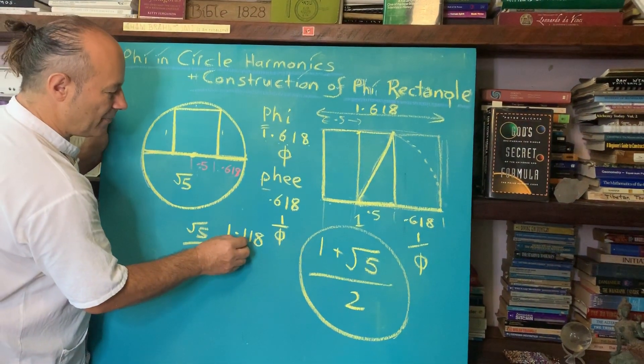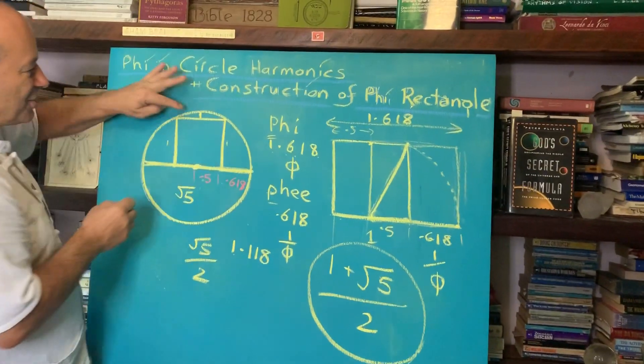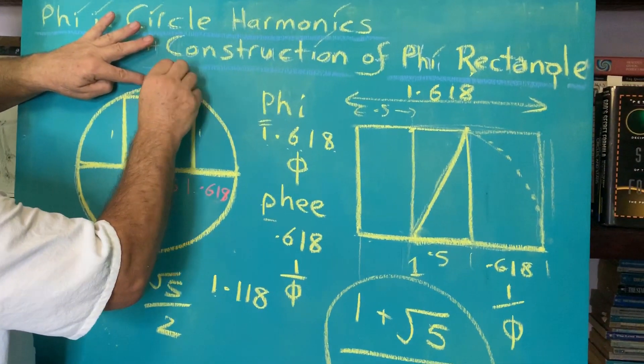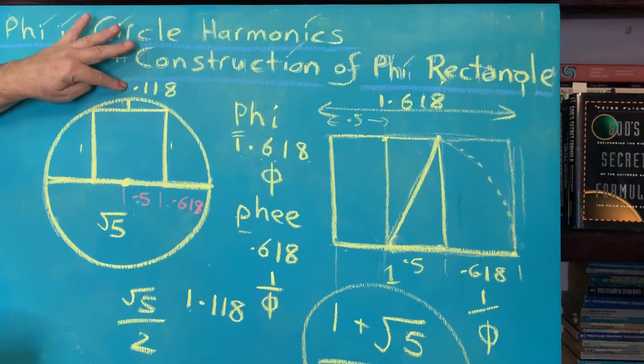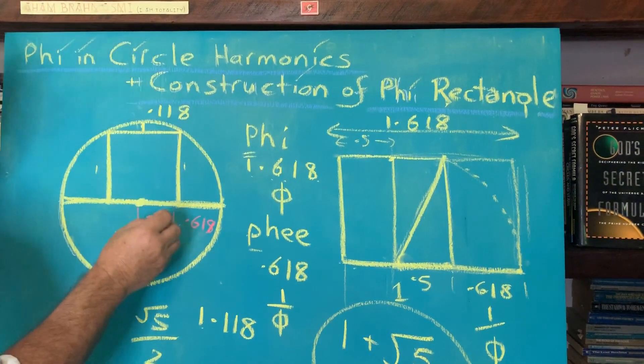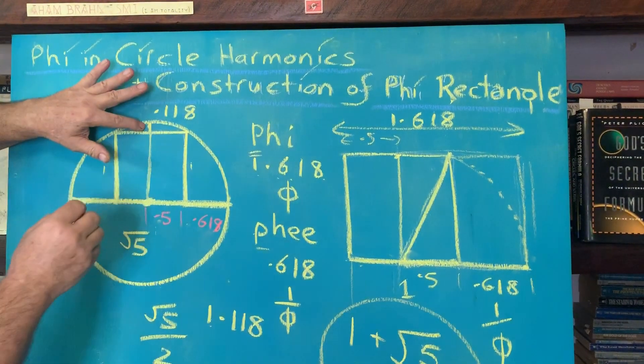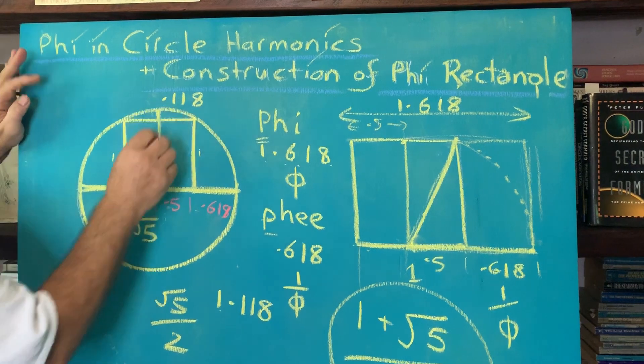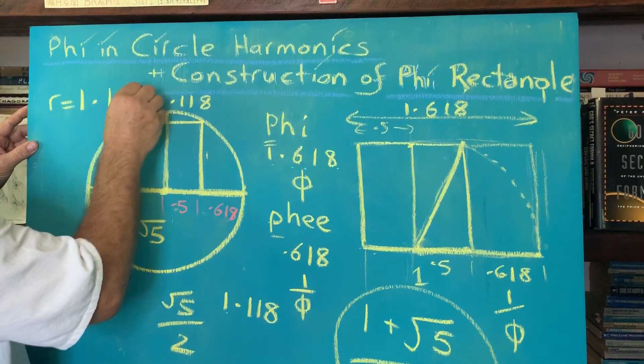That 1.118 is embedded here. This little section, the distance between the square and the circle, is 0.118. This whole distance from the center to the circle, the radius, equals 1.118.